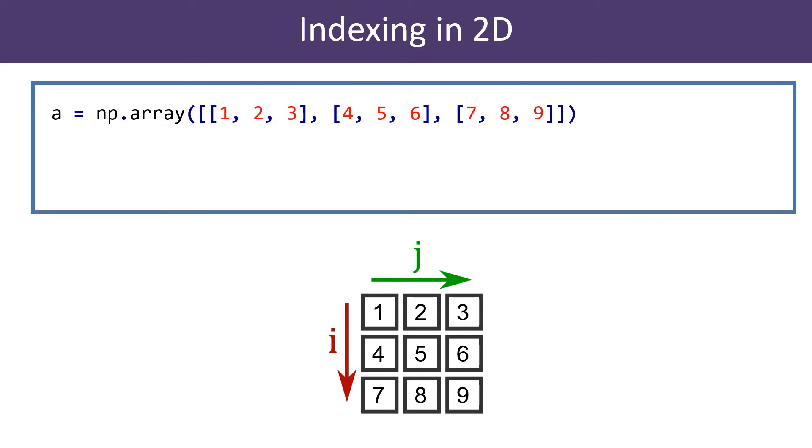Here is an example array created from a two-dimensional list using the array function. Arrow i indicates the first coordinate, the row, and j represents the second coordinate, the column.